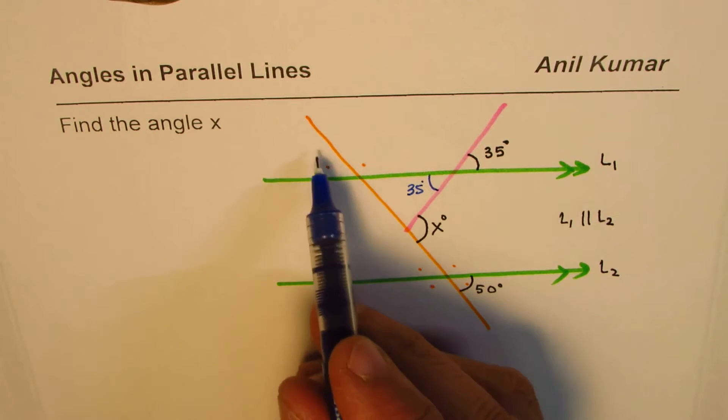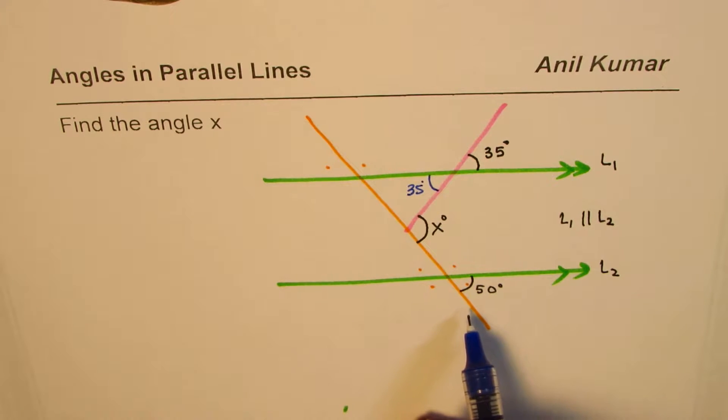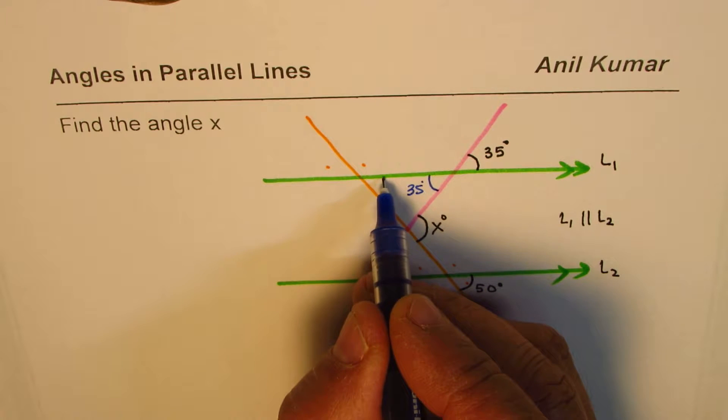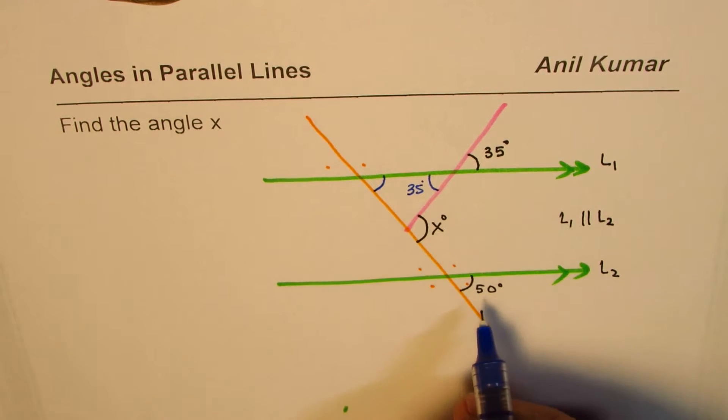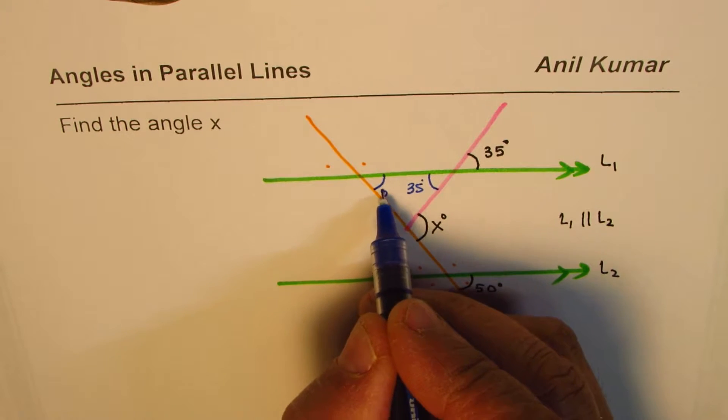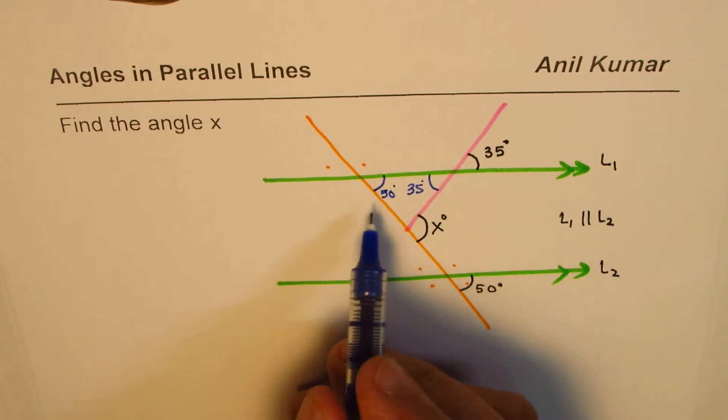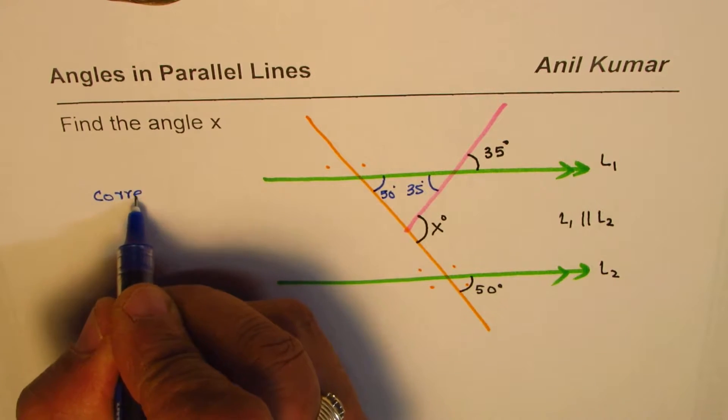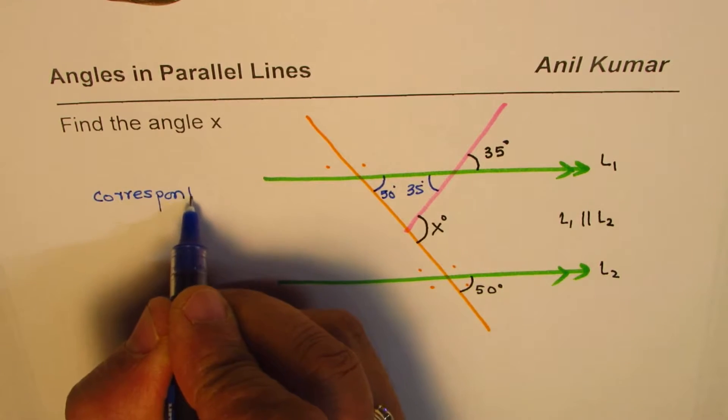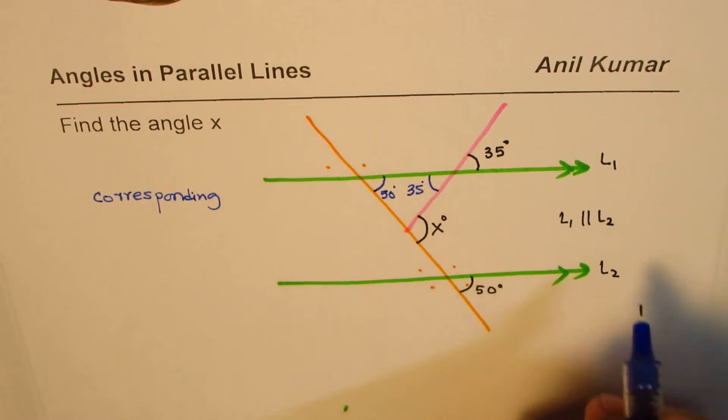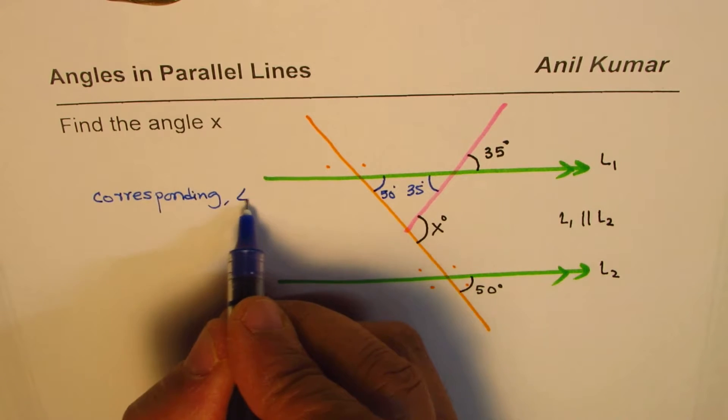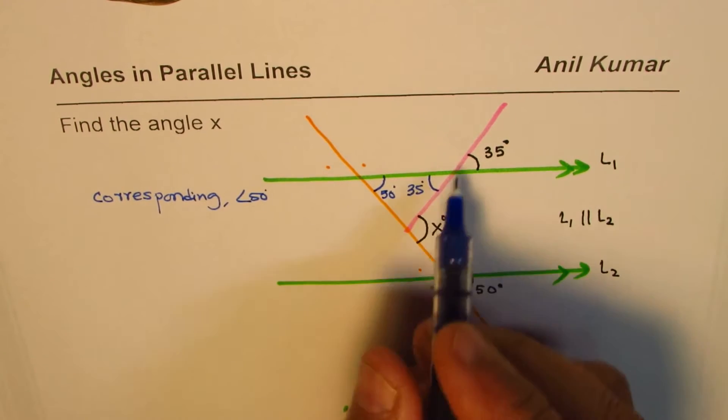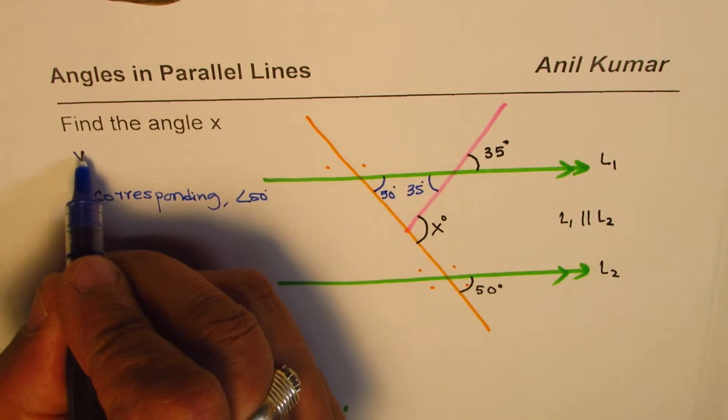Now here we are given 50 degrees. These two are parallel lines, that's the transverse line. So in transverse line that position corresponds to this position, and therefore this angle should be 50 degrees. That is corresponding angle. So we have a set of corresponding angles.